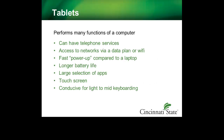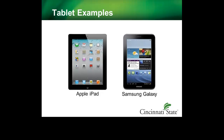A tablet is simply a more convenient portable computer. They perform many of the same functions of a laptop and have characteristics laptops don't. Tablets can store confidential college information in files, emails, etc. Characteristics of a tablet include telephone services, access to networks, data plan or Wi-Fi, fast power-up compared to a laptop, longer battery life, large selection of apps, touch screen, and conducive for light to mid-keyboarding only. The Apple iPad and Samsung Galaxy are examples of tablets.